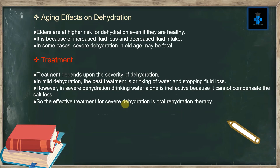Aging effects on dehydration: Elders are at high risk of dehydration even if they are healthy. This is because of increased fluid loss and decreased fluid intake. In some cases, severe dehydration in old age may be fatal.